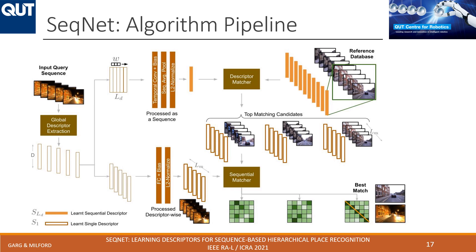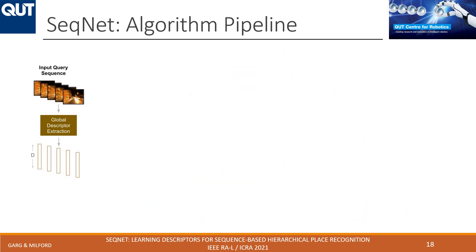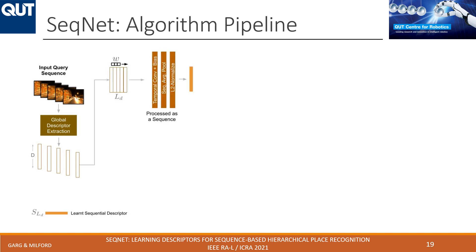In the proposed method, given an input sequence of RGB images, we first do global descriptor extraction — an offline process where for each image a d-dimensional descriptor is generated independently. Considering a sequence of five such descriptors, we then run them through a temporal convolution network using a single convolutional layer where a filter size of 3 is strided across the time axis, followed by sequential average pooling and L2 normalization, to produce a single sequential descriptor that comprises information from all images within that sequence.